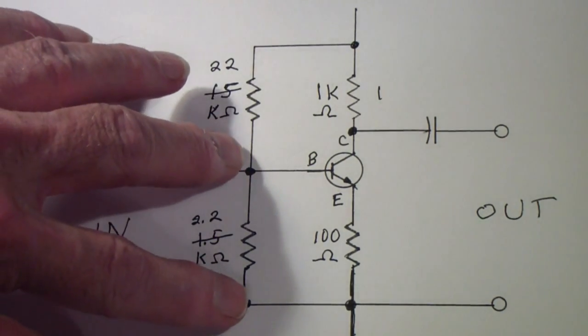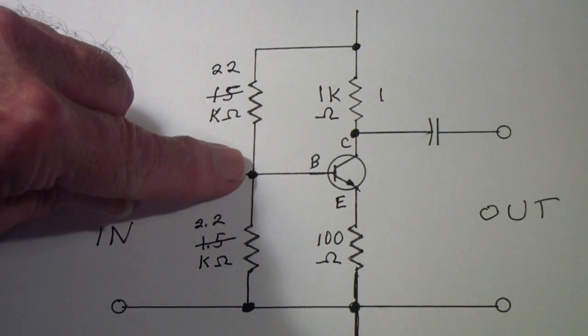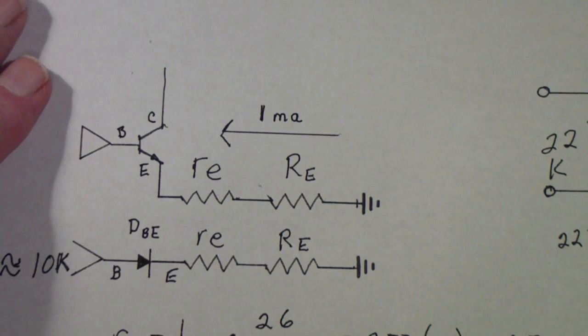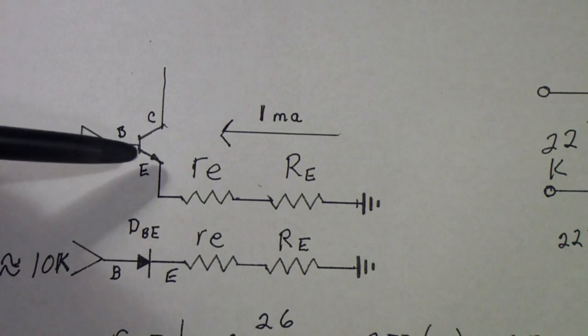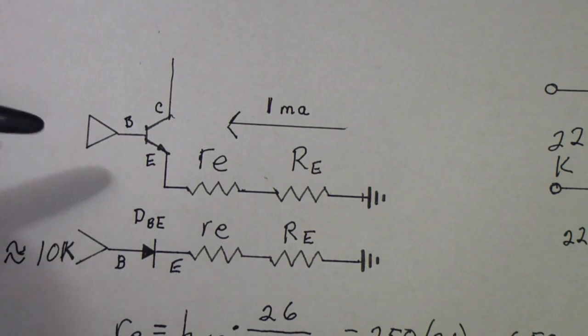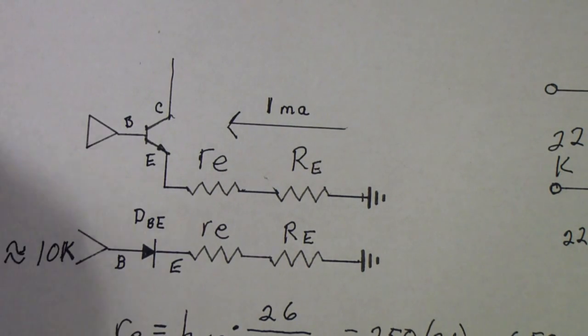So let's see if we can figure out how we can determine that. First we'll start by figuring out how we can determine the impedance looking into the base. First thing we do is we look at this circuit and this triangle simply indicates that it's looking into the base of the transistor.